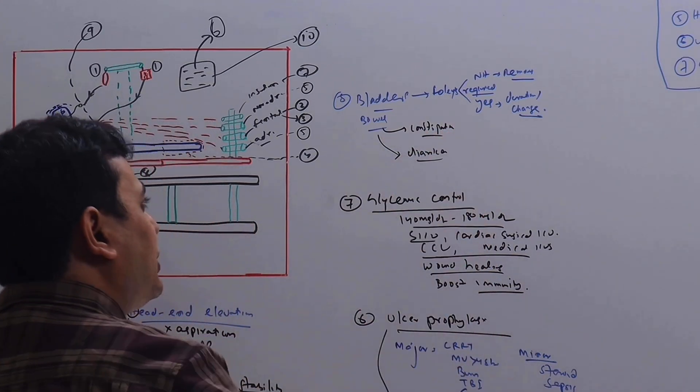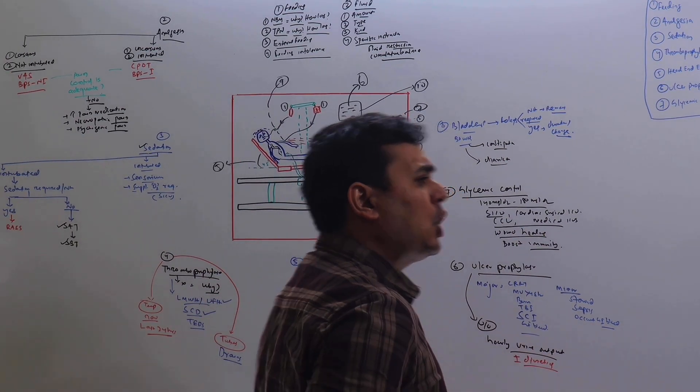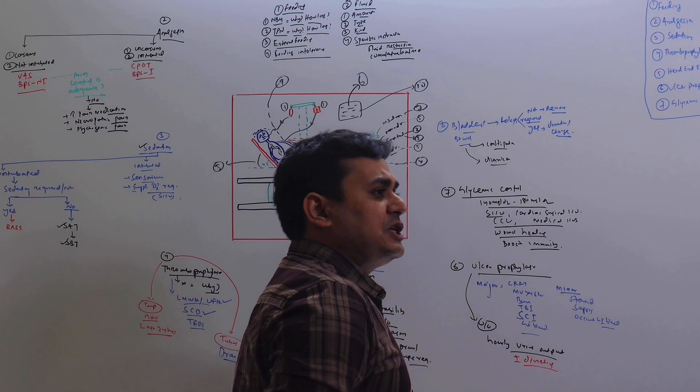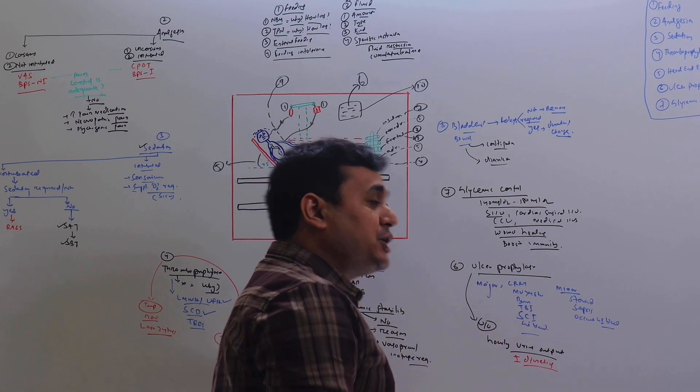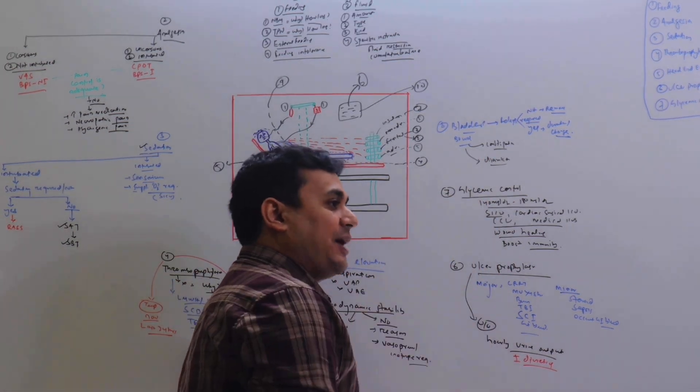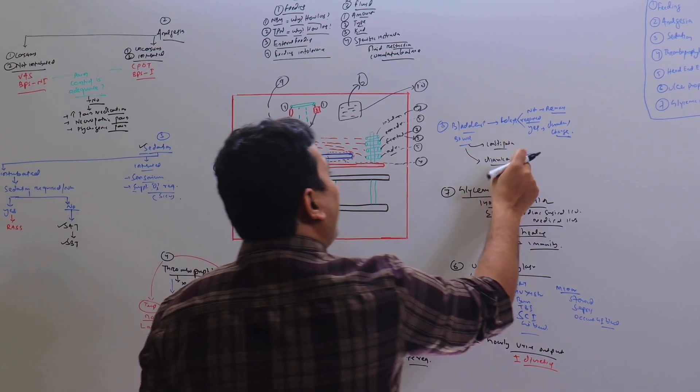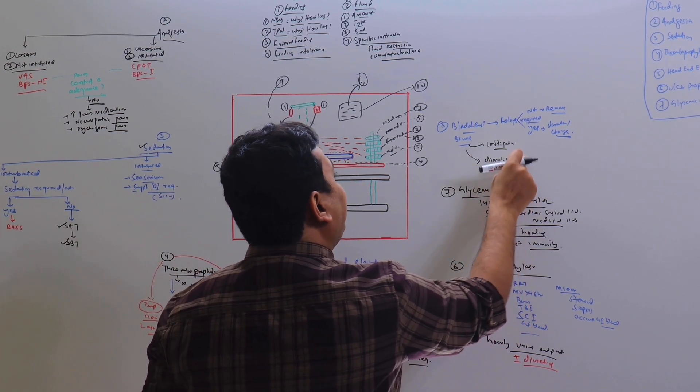In the bowel part, in the ICU both things are possible: constipation and diarrhea. Both are not good for the patient. The constipation will cause abdominal distension, vomiting, ileus, feeding intolerance, delirium. The diarrhea will cause dehydration, dyselectrolytemia, delirium. So both of them have to be prevented. What are the preventing methods you are taking? You need to write it in your note.